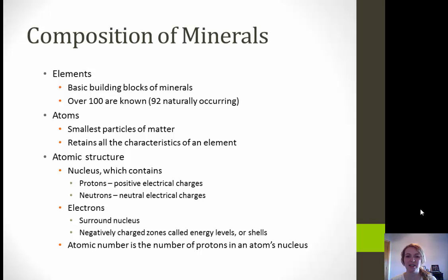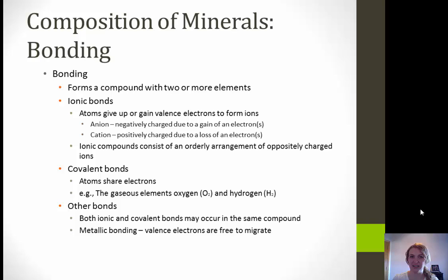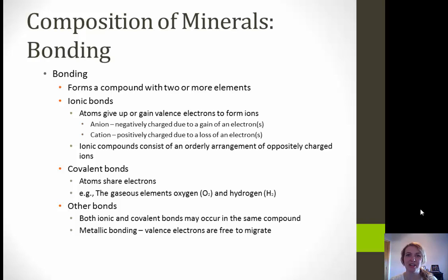The atomic number is the number of protons in an atom's nucleus. Now talking about the different types of bonding — this is pretty important. Bonding is where we have forms of a compound with two or more elements. First, we have ionic bonding, where atoms give up or gain valence electrons to form ions. An anion is negatively charged due to the gain of an electron, and a cation is positively charged due to the loss of an electron. Ionic compounds consist of an orderly arrangement of oppositely charged ions.